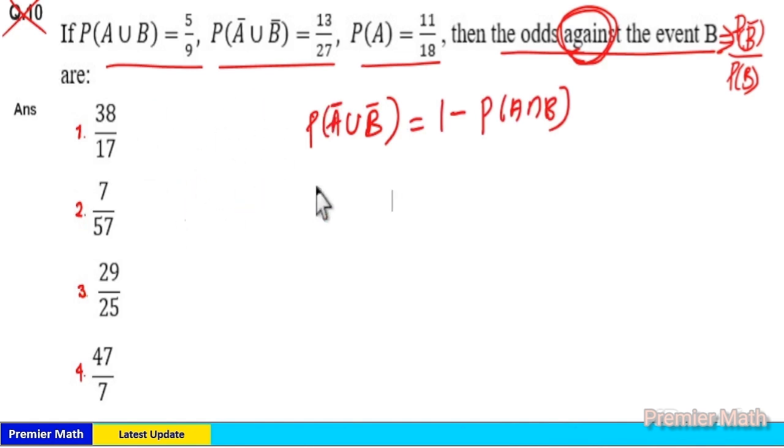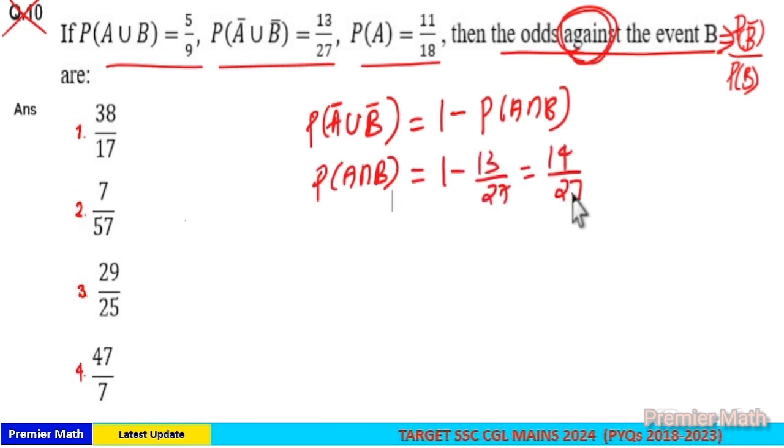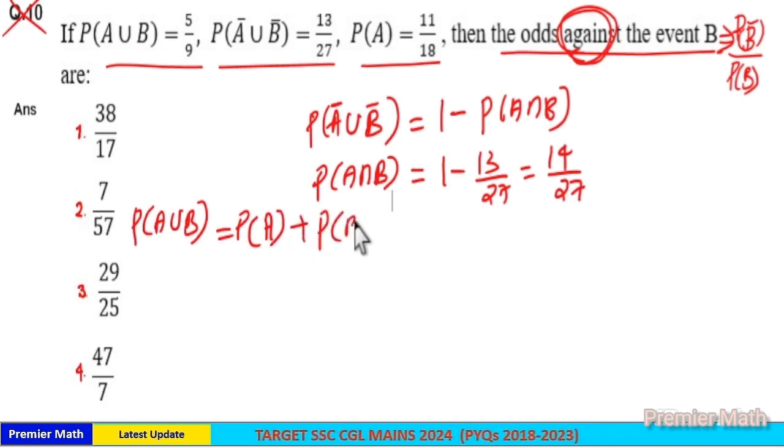Now probability of A ∩ B is equal to 1 minus 13/27 which is equal to 14/27. And here P(A ∪ B) formula is equal to P(A) + P(B) - P(A ∩ B).